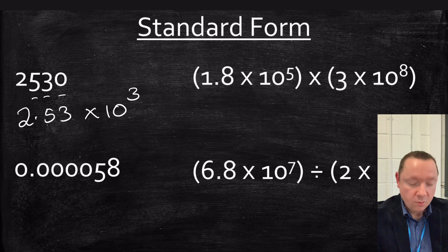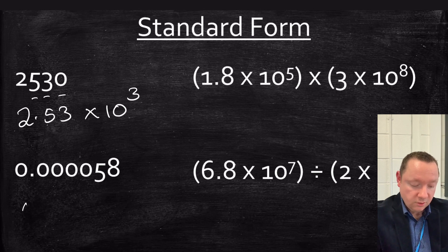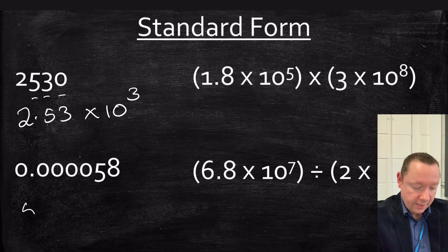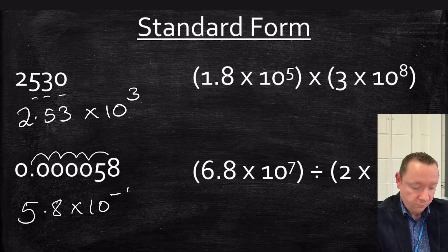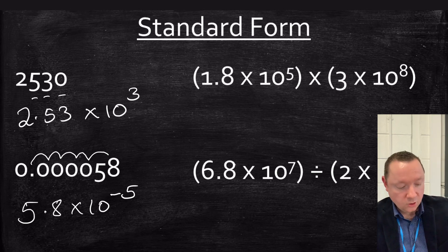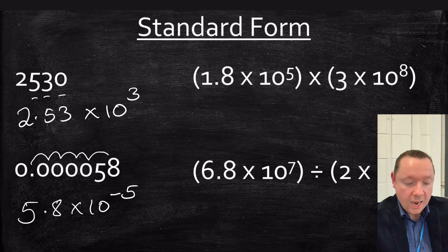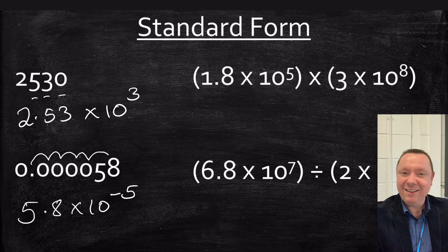Bigger numbers are quite simple. With smaller numbers, just the same idea. I've got 0.000058, so I've got 5.8 times 10 to the power, and I want to imagine this decimal point jumping one, two, three, four, five, so minus five. Positive for numbers that are between one and zero.